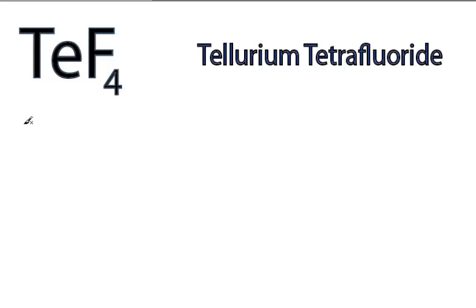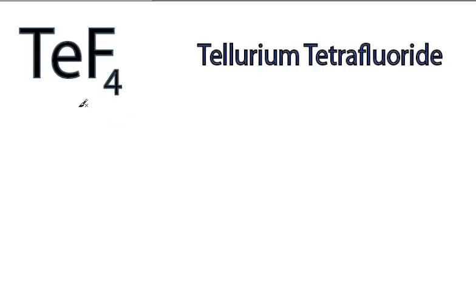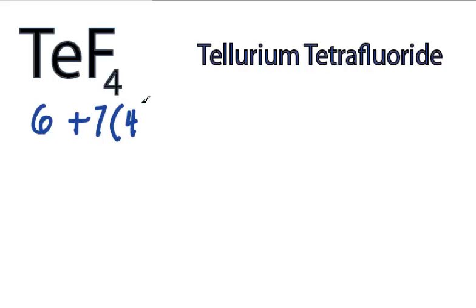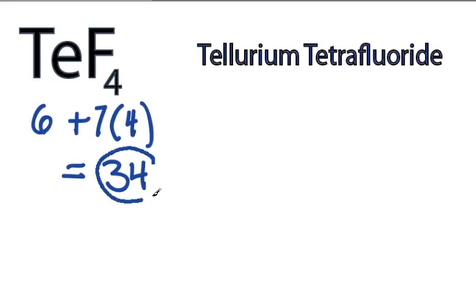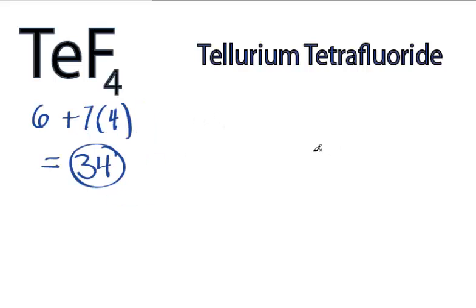This is the Lewis structure for TeF₄. Tellurium is in group 6, or 16, on the periodic table. It has 6 valence electrons. Fluorine has 7, but we have 4 fluorines, for a total of 34 valence electrons for TeF₄.